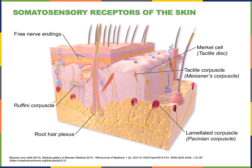Another type of encapsulated nerve ending found in the dermis is the Pacinian corpuscles. The Pacinian corpuscles are located deep in the dermis and are responsible for detecting deep pressure and high frequency vibration. Each Pacinian corpuscle can respond to a relatively large region of the surface of the skin, so they are found at a relatively low density in the skin, but each has a very large receptive field.